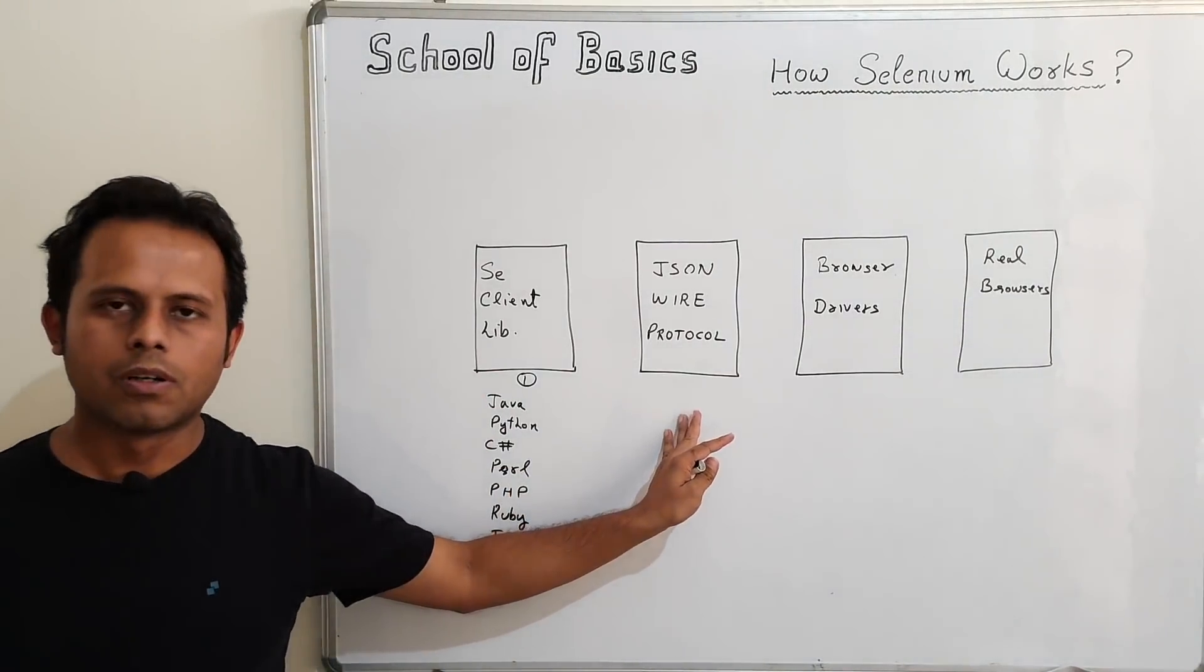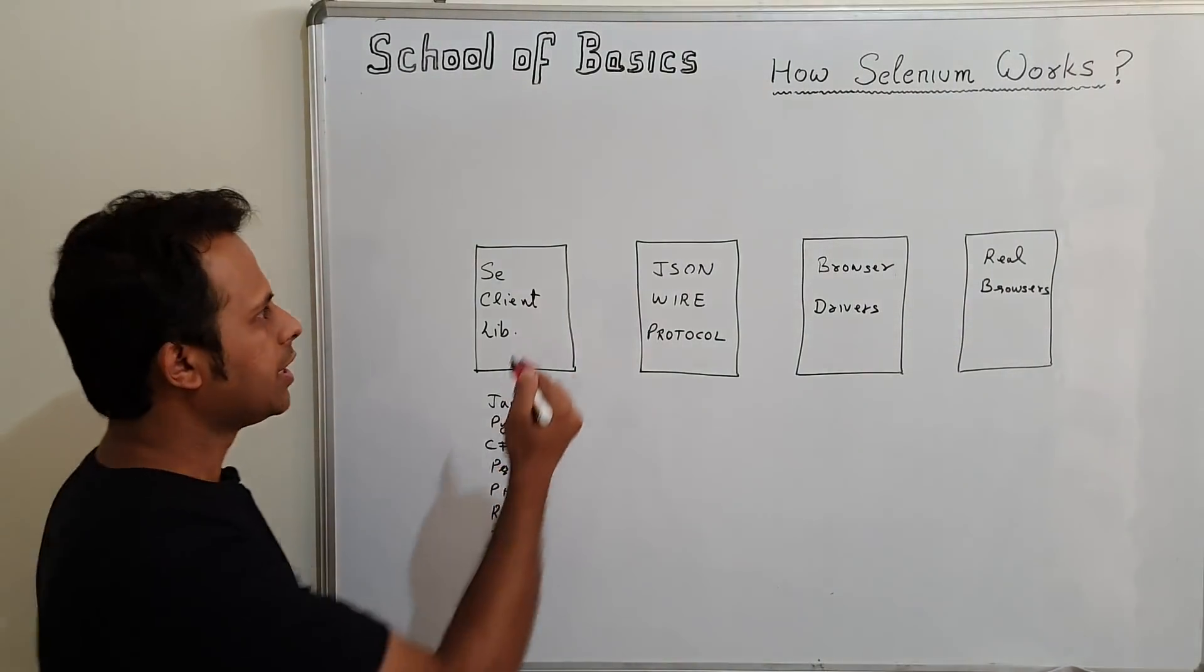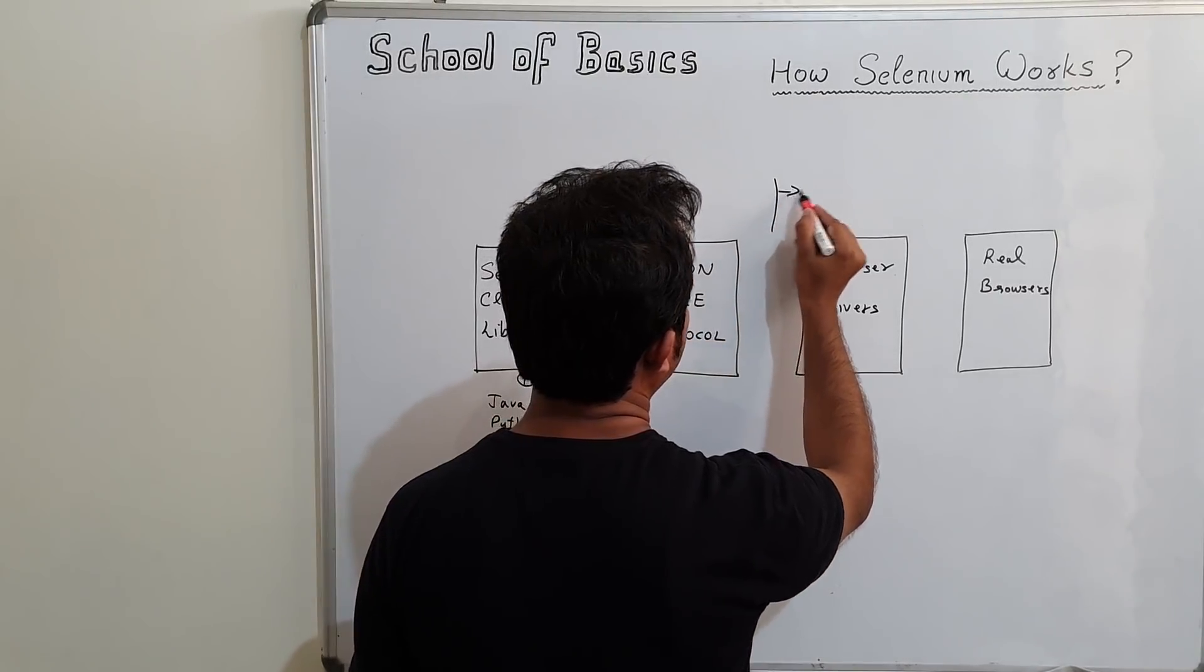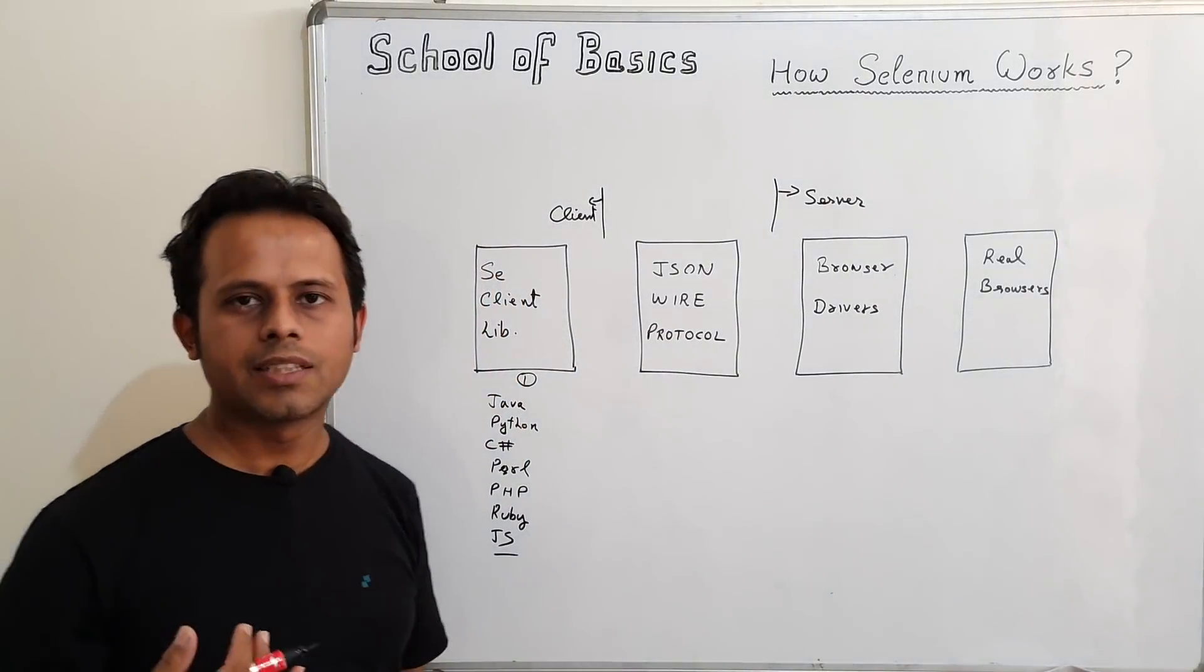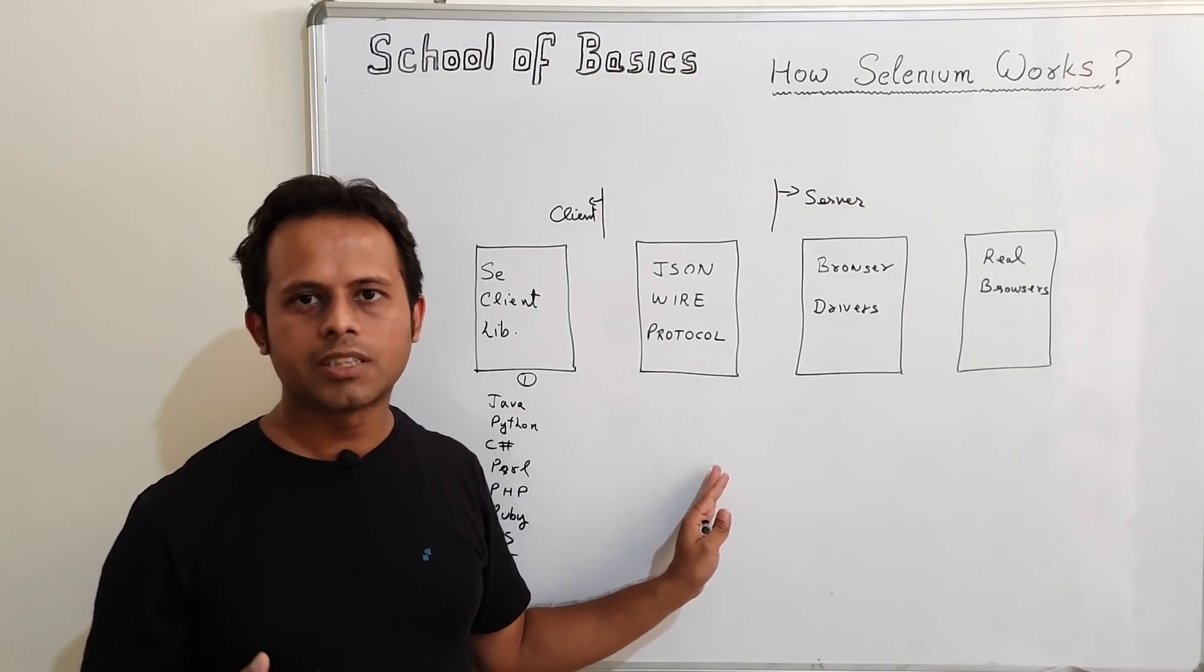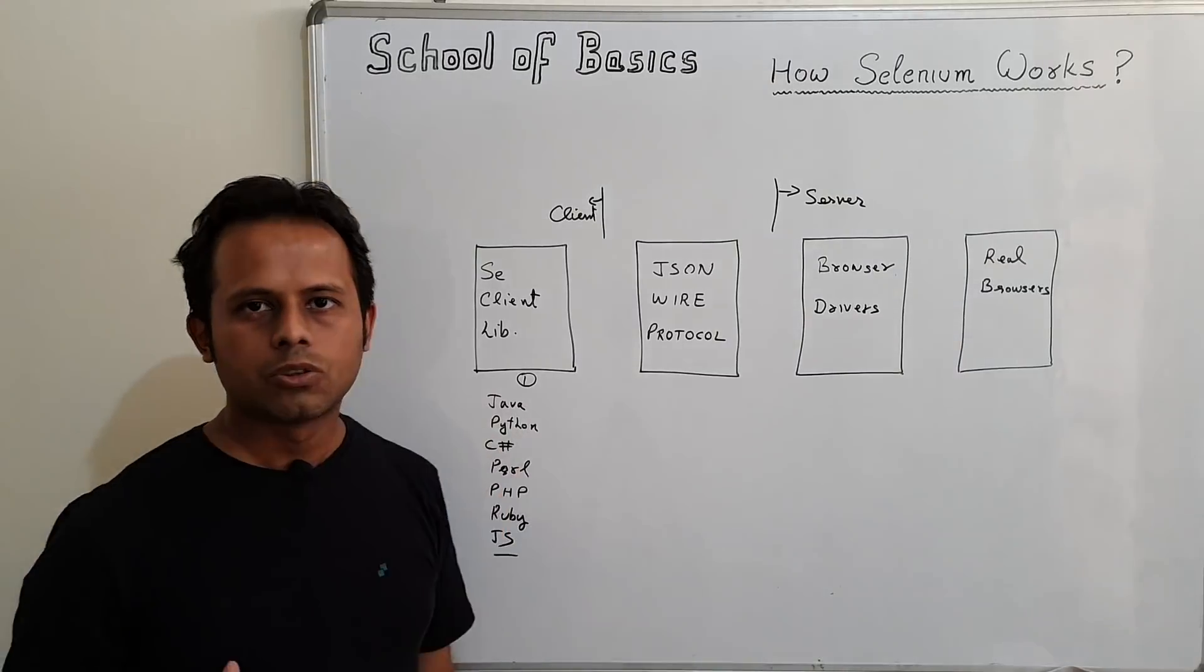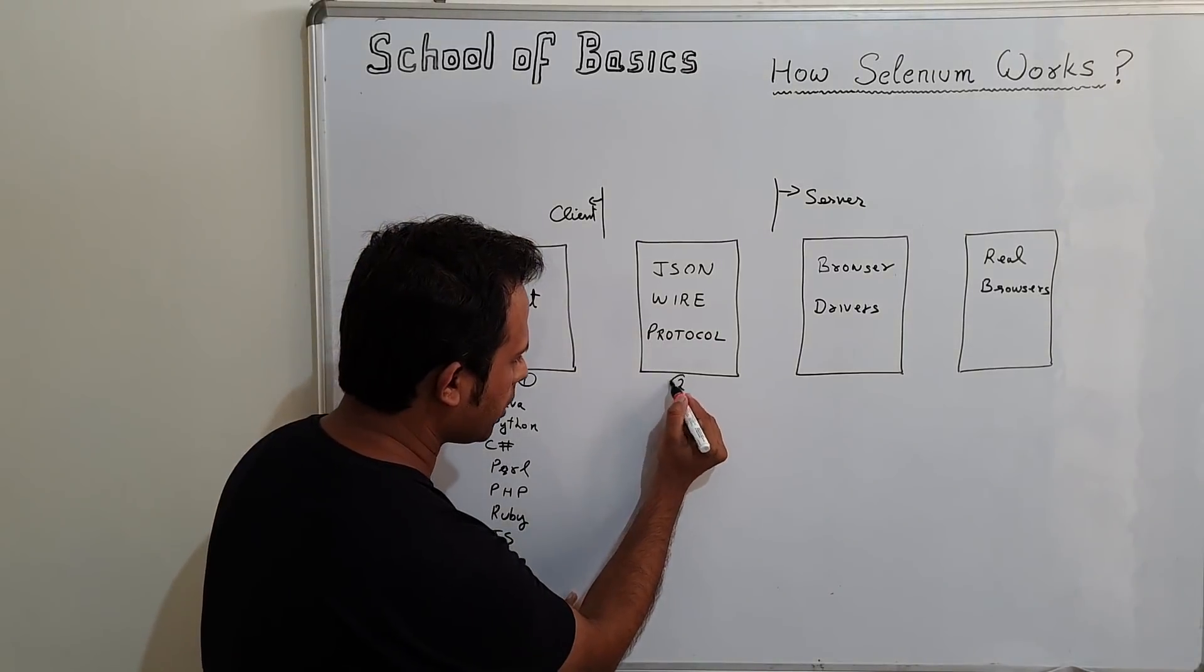Then we have JSON wire protocol. This is a very important component. As I told you, this is a client and server architecture. This part is client and this part is server. We have a client and a server, and to interact between client and server we use JSON wire protocol. JSON wire protocol converts our request in a format that can be understood by the server and also converts the request that can be understood by the client.